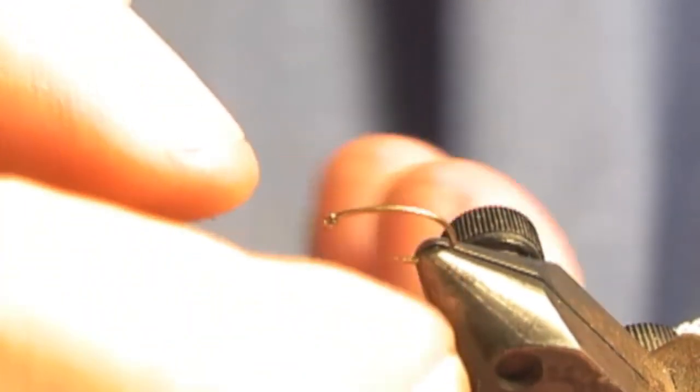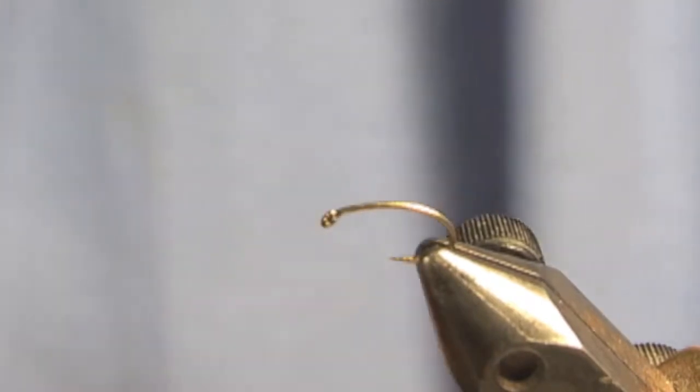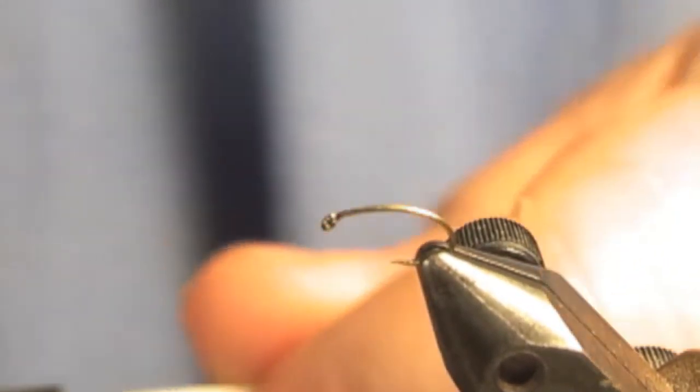The next pattern is a little bit more complicated, but not much. This is called a spent apple caddis. The apple caddis up in the Catskills are a favorite hatch. They come after the big early season mayflies, but before the big drake hatches that everyone loves.